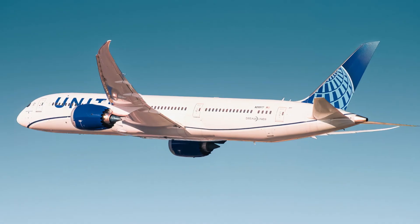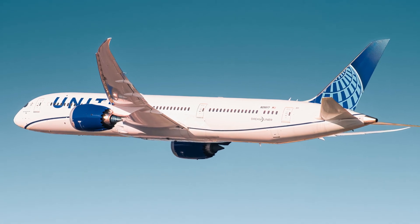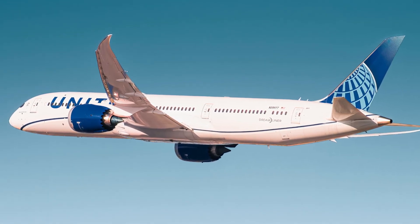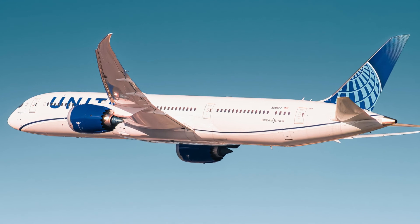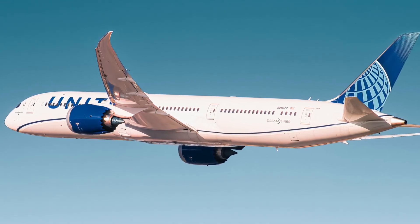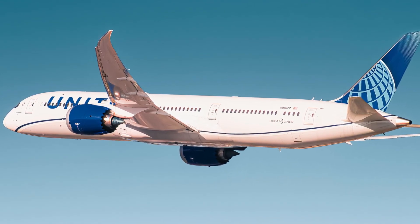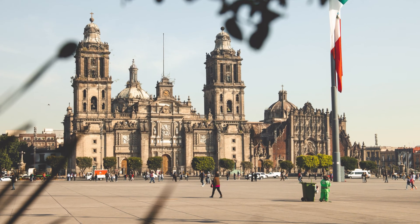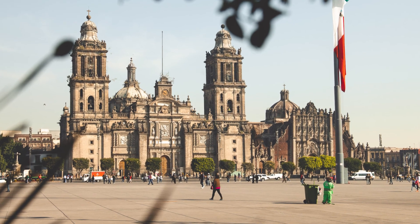The final and ninth freedom grants an airline the right to operate a domestic flight in a foreign country, even if it's not part of a longer flight operating or starting at its home country. So with the eighth freedom, the leg from Mexico City to Houston was necessary. But with the ninth freedom, the Mexican airline can now operate a flight from Houston to Dallas without needing to come from or go to Mexico City.